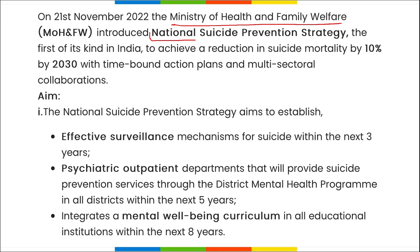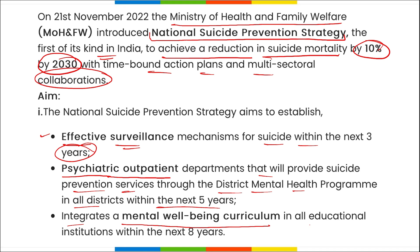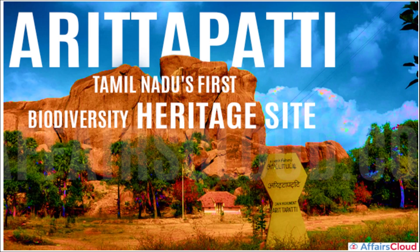The Ministry of Health and Family Welfare has introduced the National Suicide Prevention Strategy — the first of its kind in India — aiming to reduce suicide mortality by 10% by 2030 through time-bound action plans and multi-sectoral collaboration. Key aims include an effective surveillance mechanism within three years, psychiatric outpatient services in all districts within five years, and mental well-being curriculum in educational institutions within eight years.